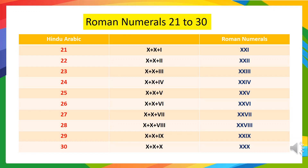22 means 10 plus 10 plus 2, so we will write it as XXII. 23 means 10 plus 10 plus 3, so we will write it as XXIII. 24 means 10 plus 10 plus 4, so we will write it as XXIV. 25 means 10 plus 10 plus 5, so we will write it as XXV.